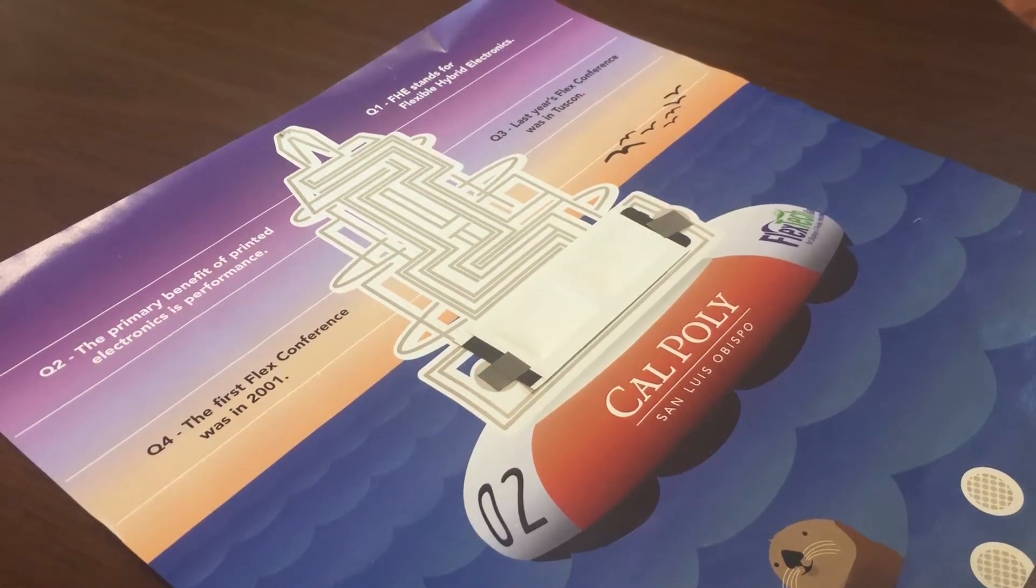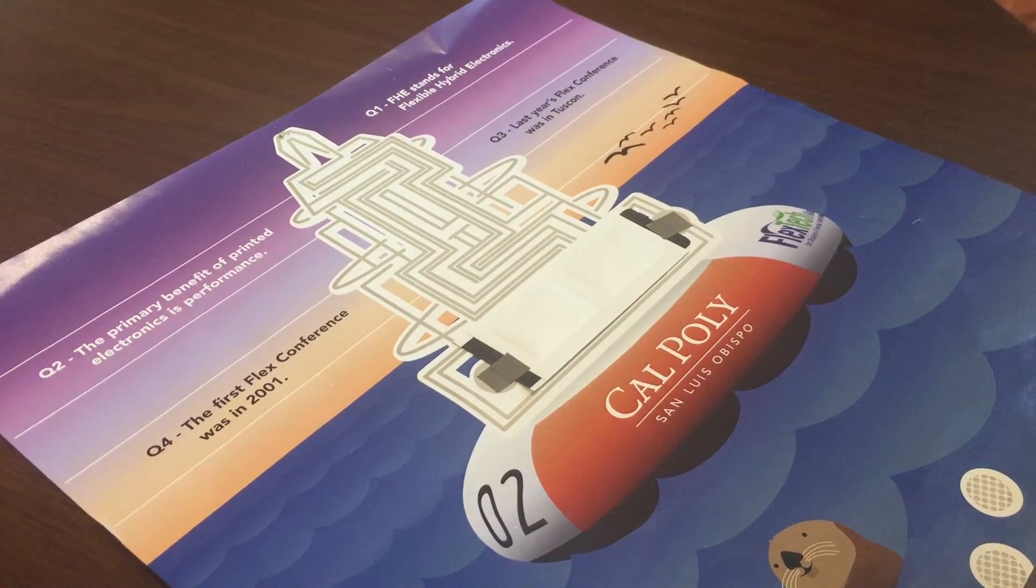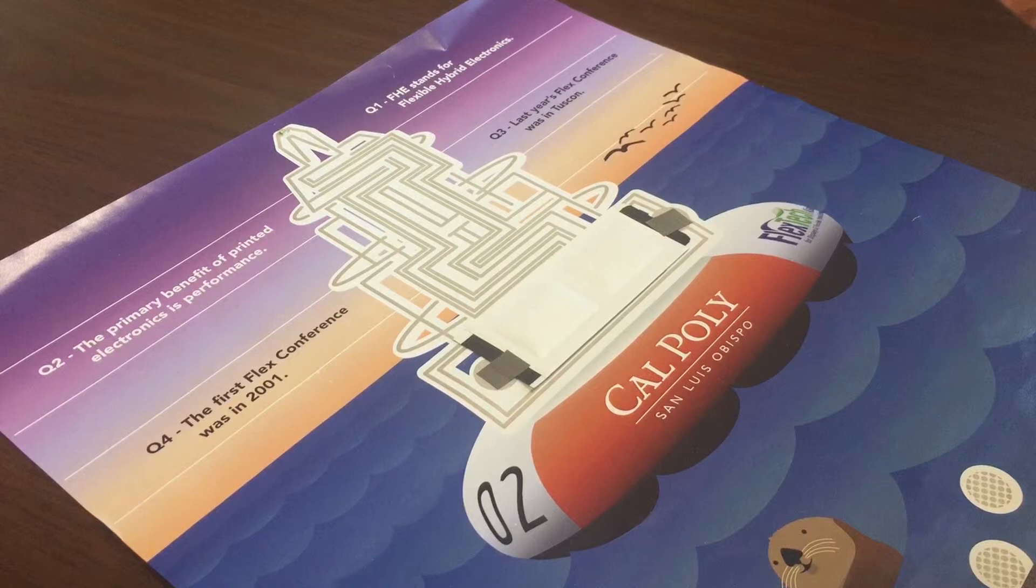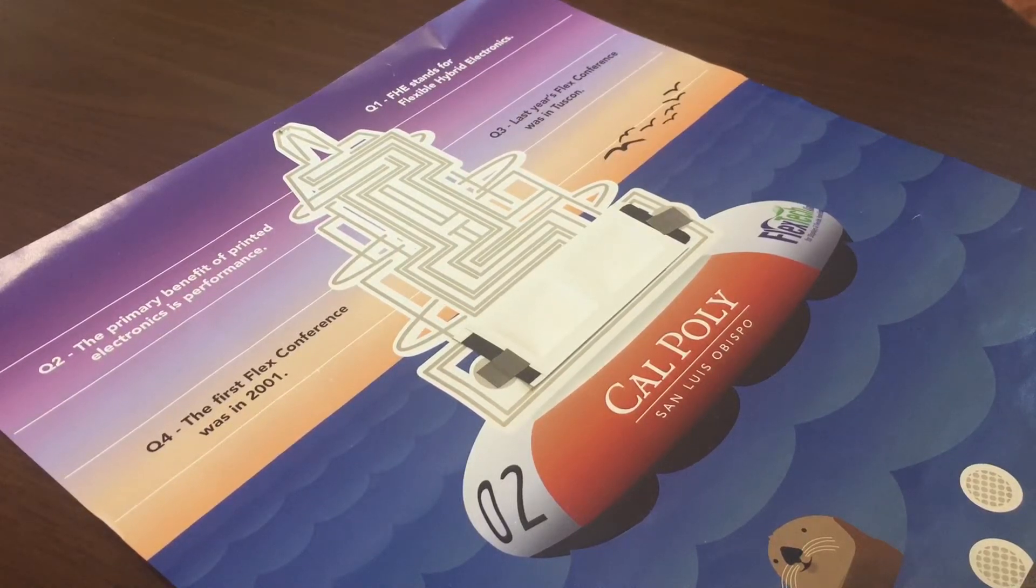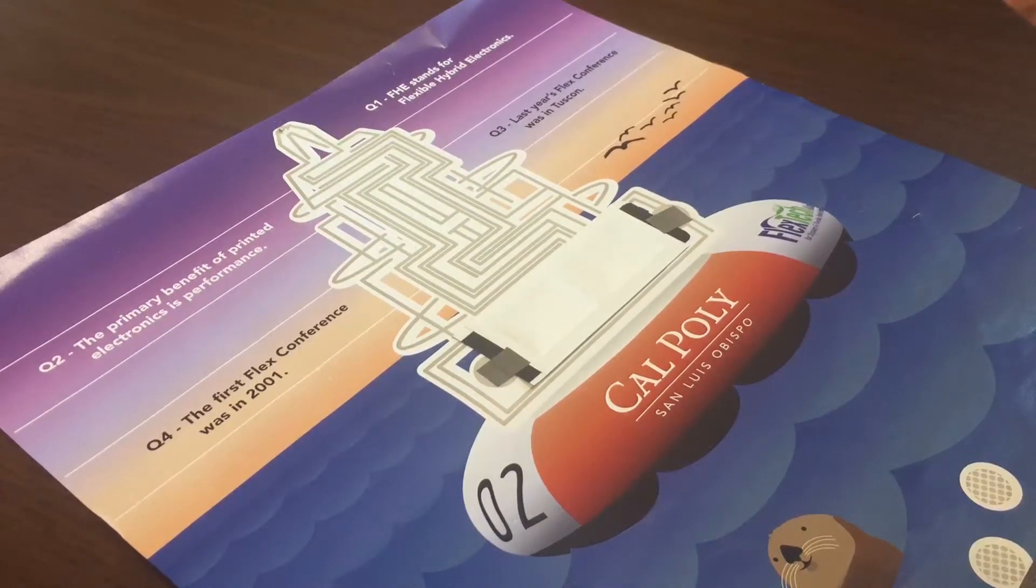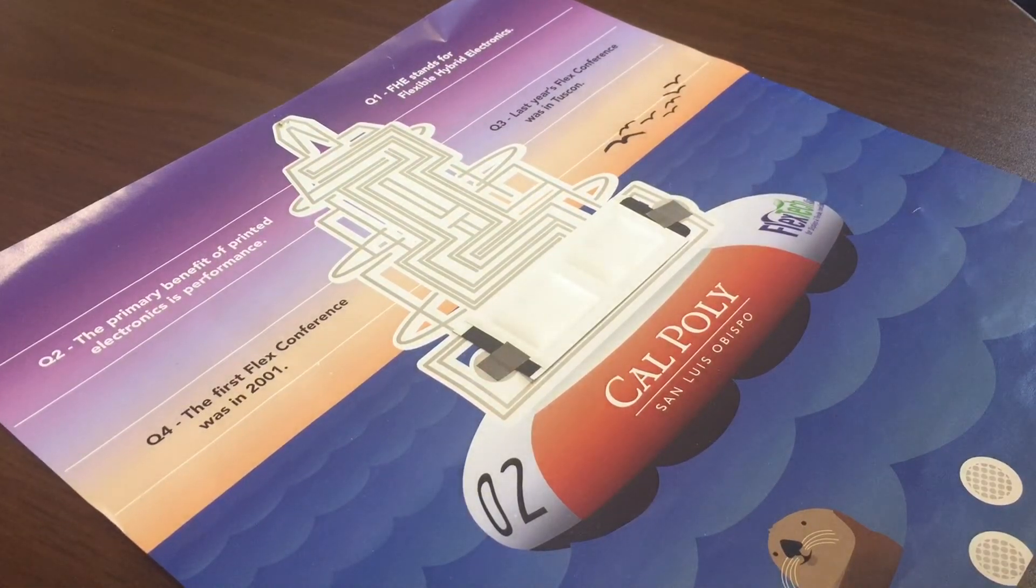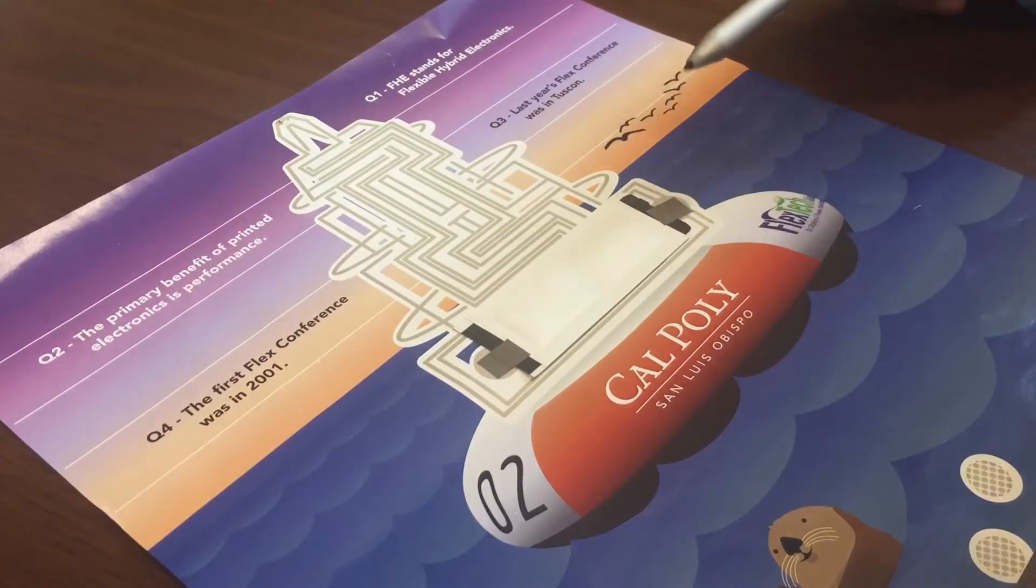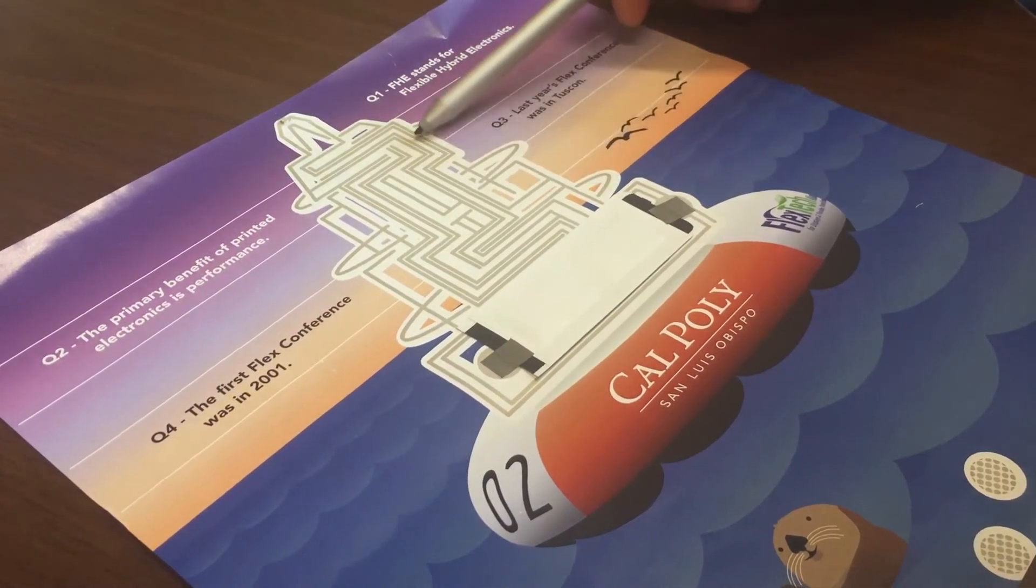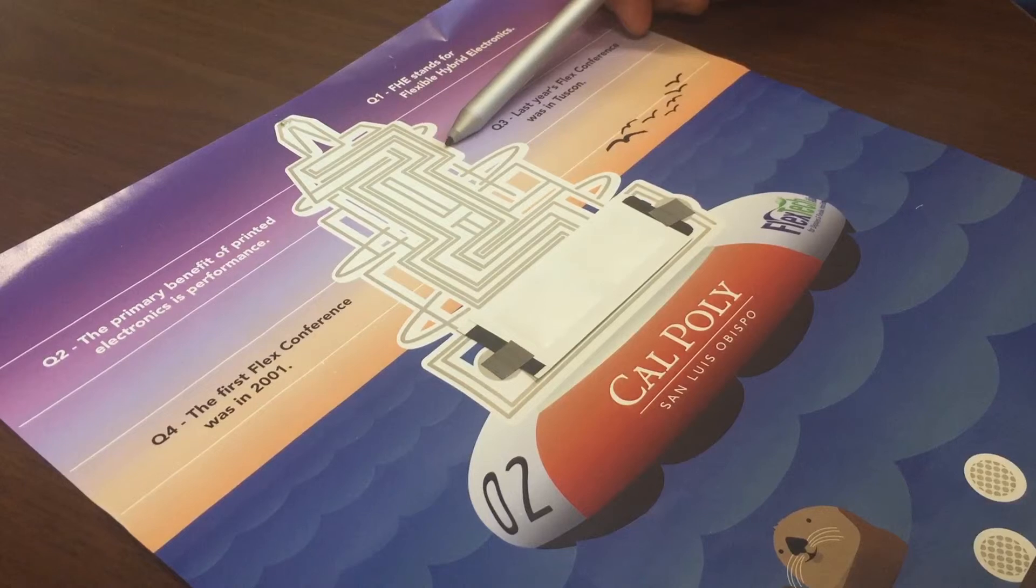Here's another quick example to give you just an idea. This is from our friends over at Cal Poly San Luis Obispo. And some of their students designed and printed this particular demo. It is a circuit printed on paper. So you can see the circuit on the paper.